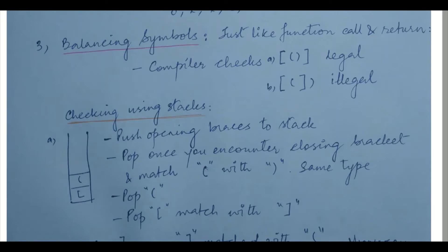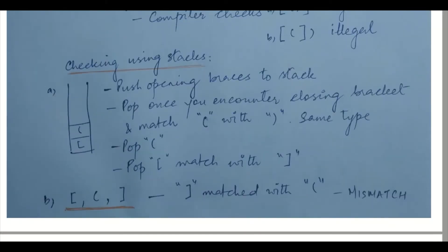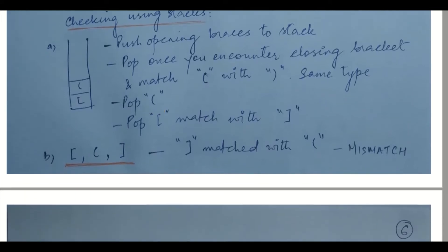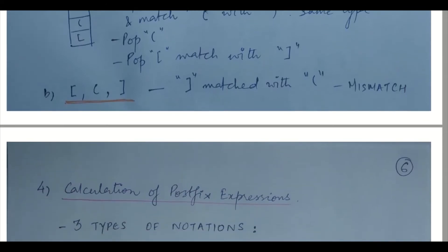The steps are: push opening braces onto the stack, and pop once you encounter any kind of closing bracket. Then match this closing bracket with what is at the top of the stack, which you get using pop. ASCII values are used so opening and closing brackets are matched accordingly. In case of a mismatch, it is reported by the compiler and you make the necessary changes.